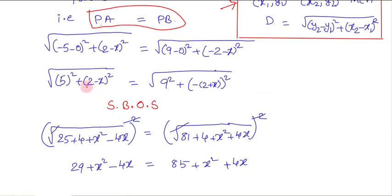So we have: square root of (5 squared plus (2 minus x) whole square) equals square root of (9 squared plus (-2 minus x) whole square). Taking minus as common from (-2 minus x), I can write it as minus(x plus 2), or equivalently (x plus 2) whole square.